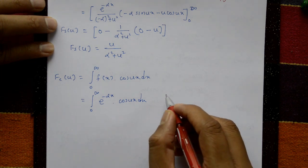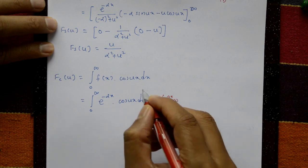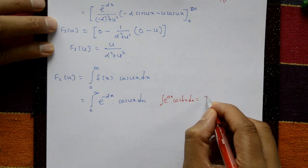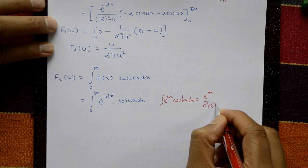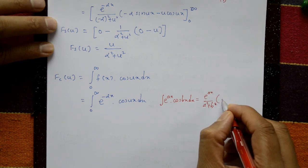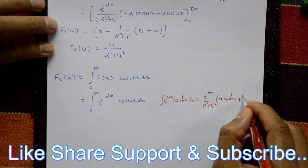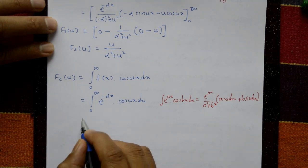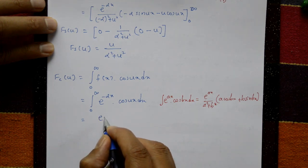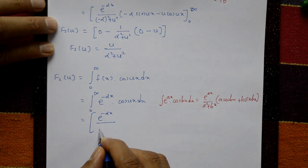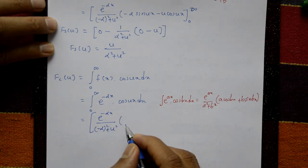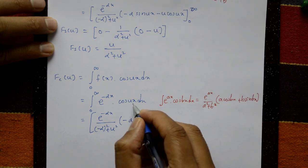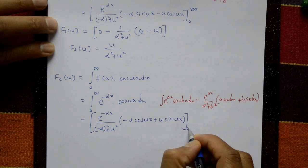Using the standard formula: the integration of e raised to ax into cos(bx) with respect to x equals e raised to ax upon (a squared plus b squared), into (a·cos(bx) plus b·sin(bx)). Here a means minus alpha and b means u. After integration, we get: e raised to minus alpha x upon (alpha squared plus u squared), into (minus alpha·cos(ux) plus u·sine(ux)), with limits 0 to infinity.